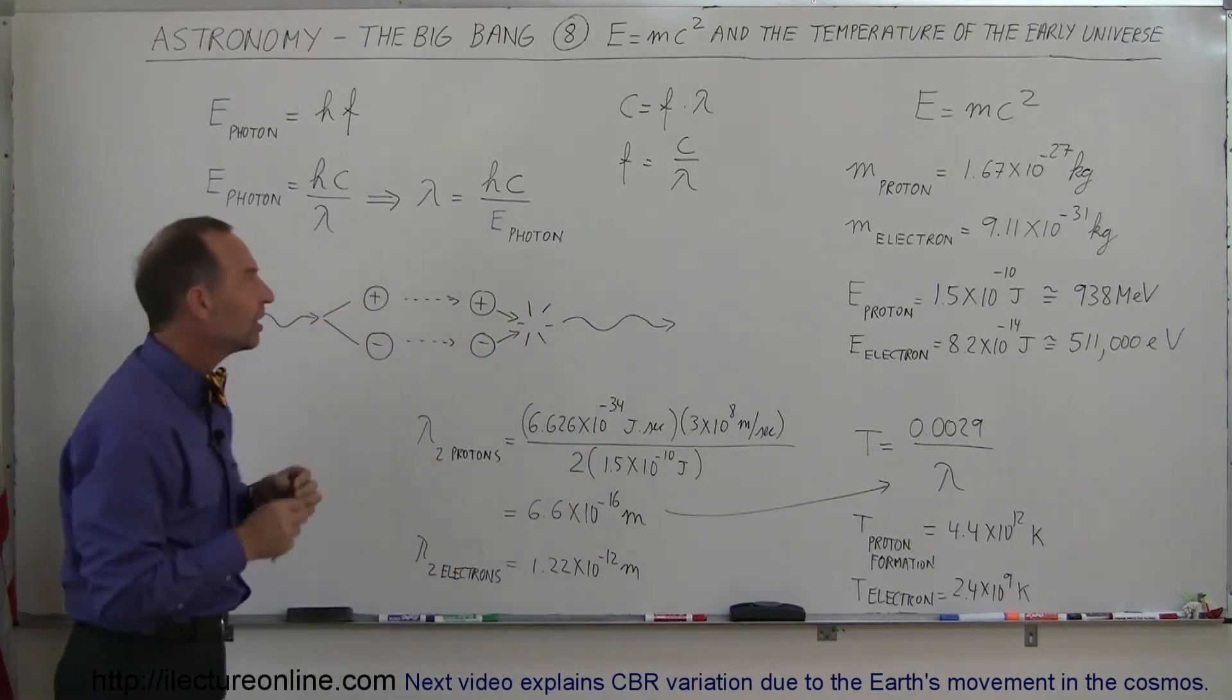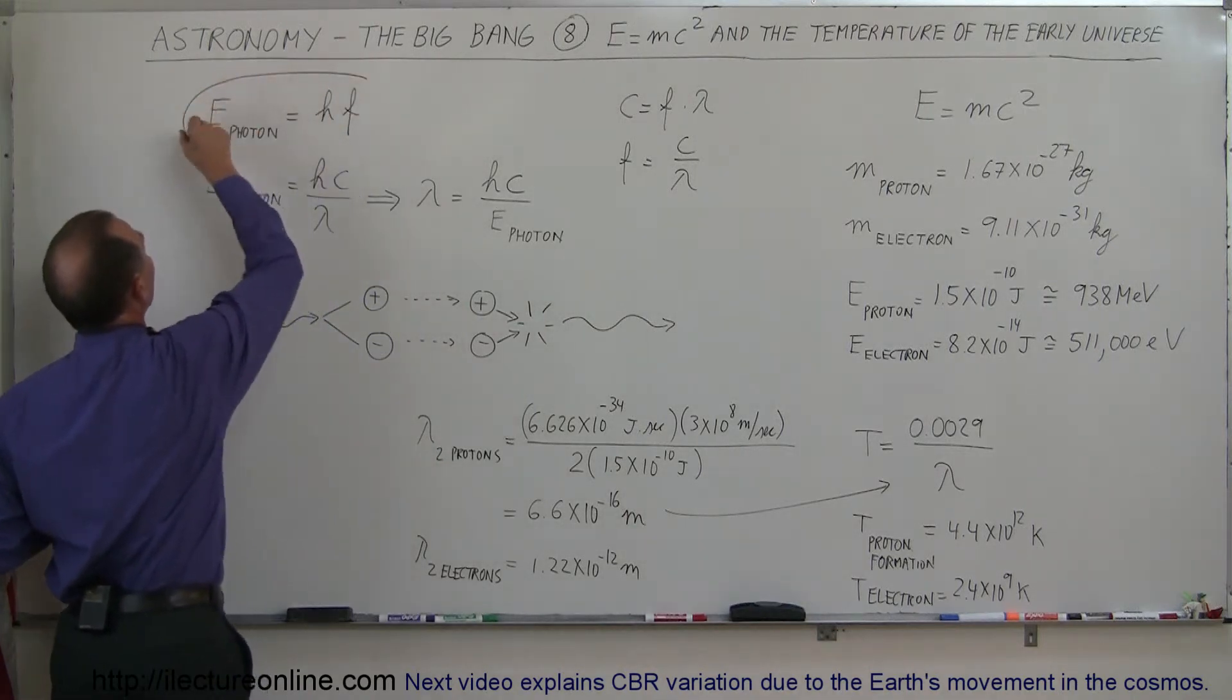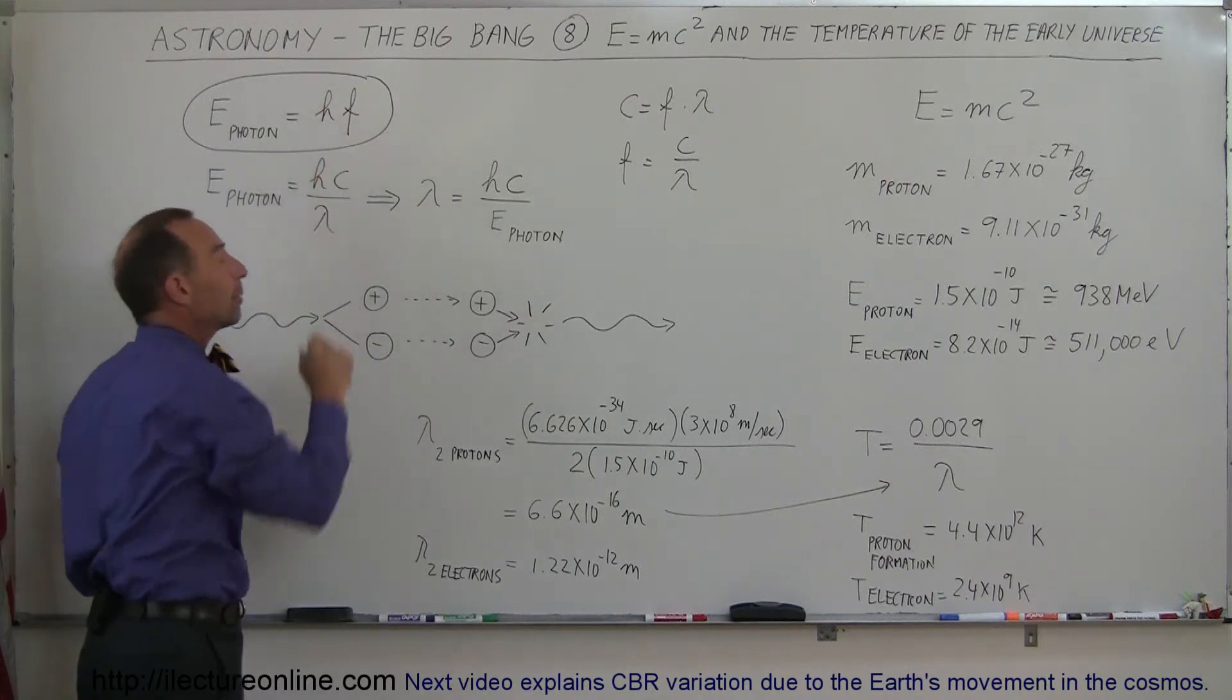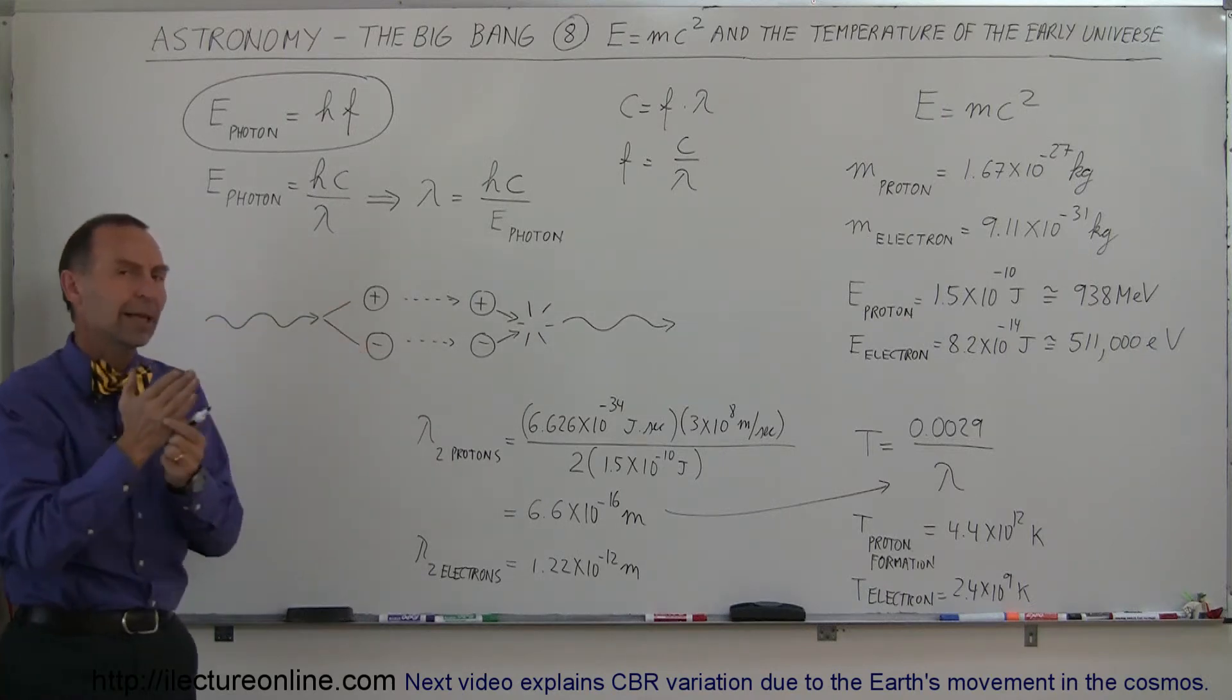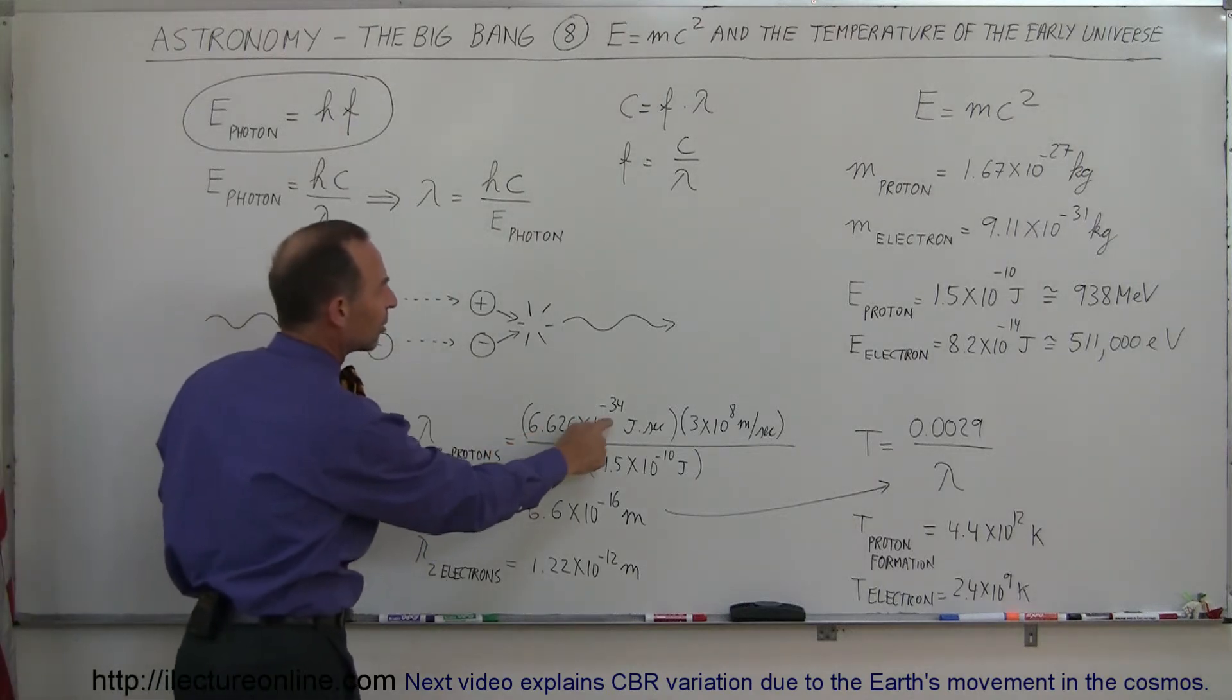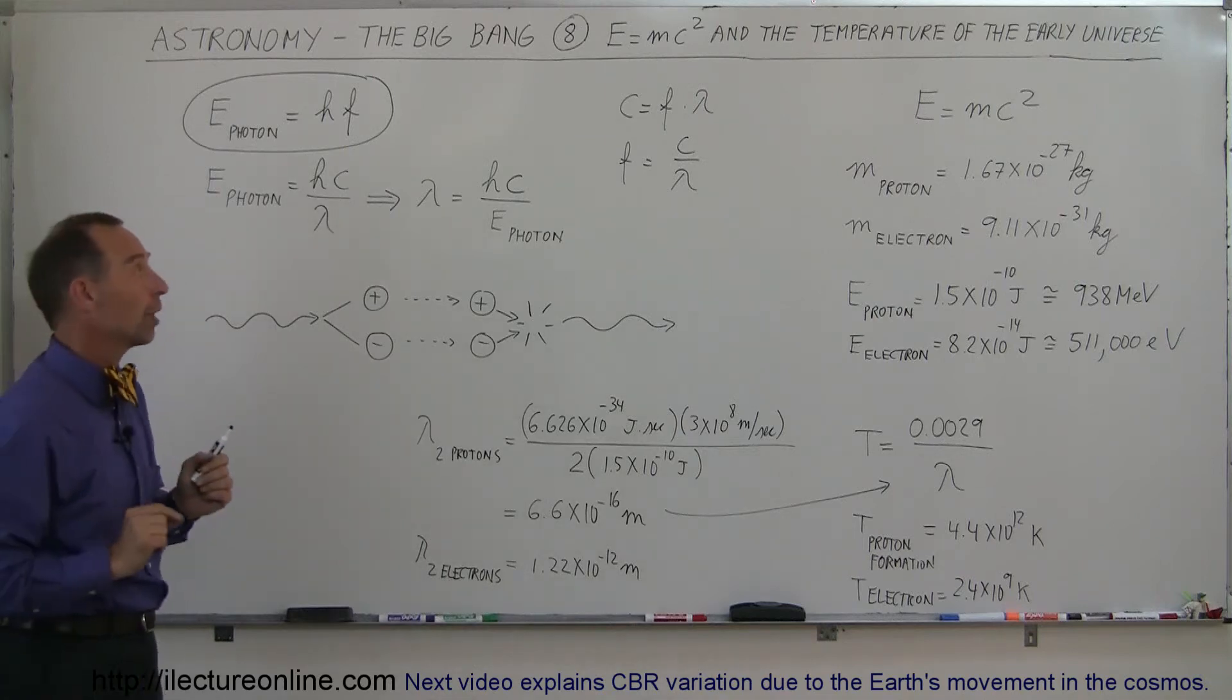So since we know how much energy it takes, and we also discovered that a single photon has energy according to this equation, it's equal to Planck's constant times the frequency of the radiation. So however fast the energy oscillates up and down, that's the frequency, multiplied times the constant H. H is 6.626 times 10 to the minus 34 joules times seconds. If we multiply those two things together, we can calculate the energy of a photon.